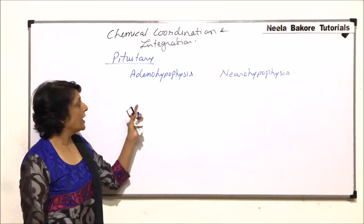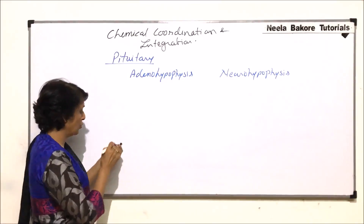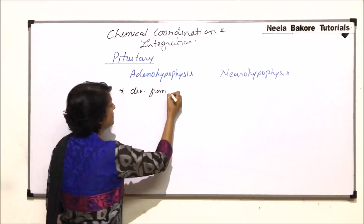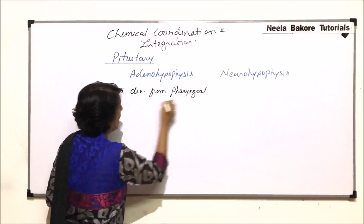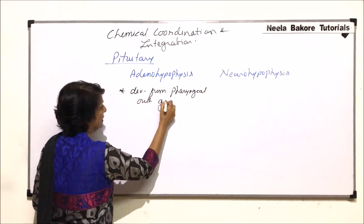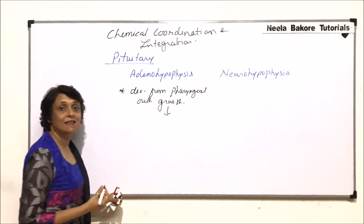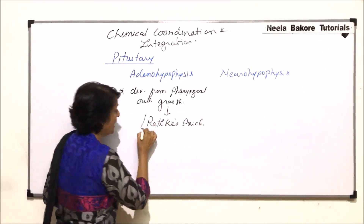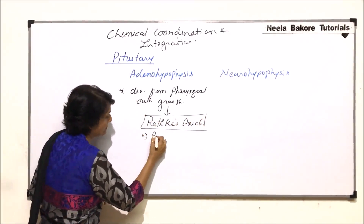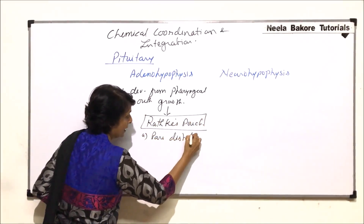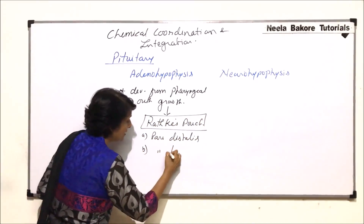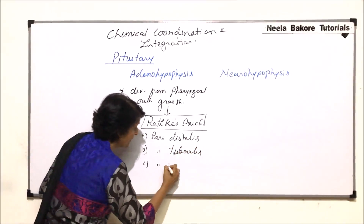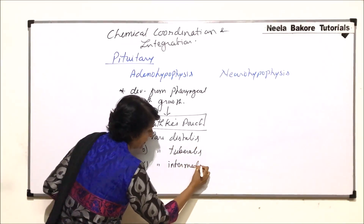Adenohypophysis is formed by a pharyngeal outgrowth, so it develops from an outgrowth of the pharynx known as a pharyngeal outgrowth. This outgrowth is known as Rathke's pouch. Rathke's pouch has three parts: the first part is known as pars distalis, the second is pars tuberalis, and the third is pars intermedia.